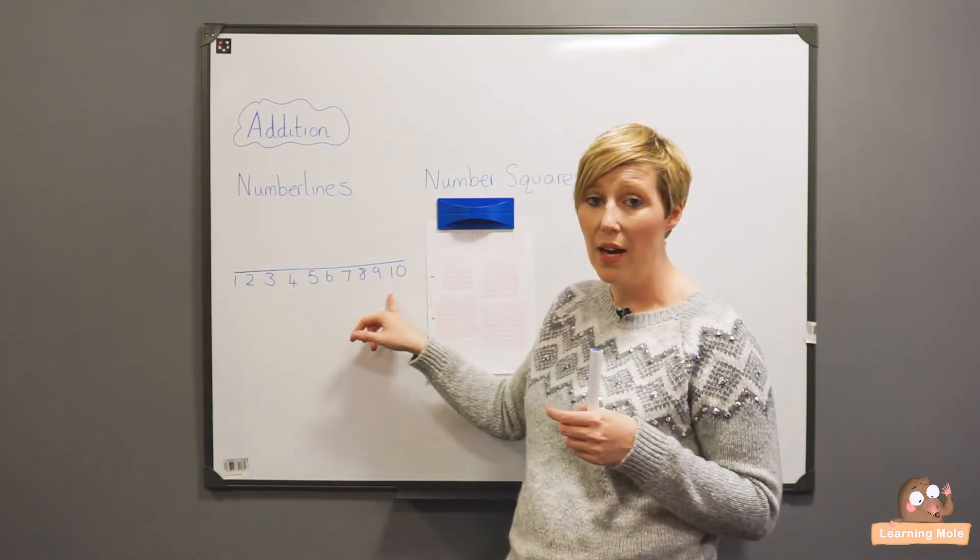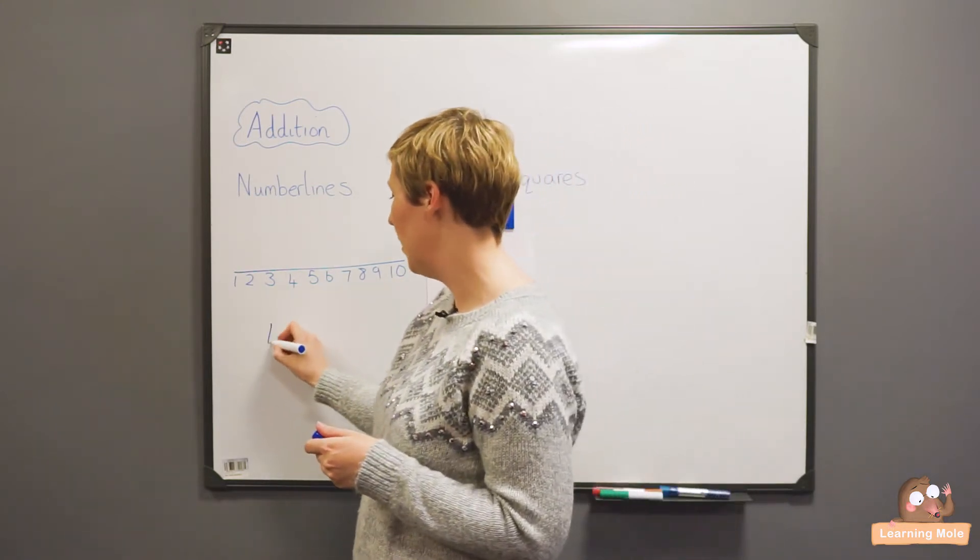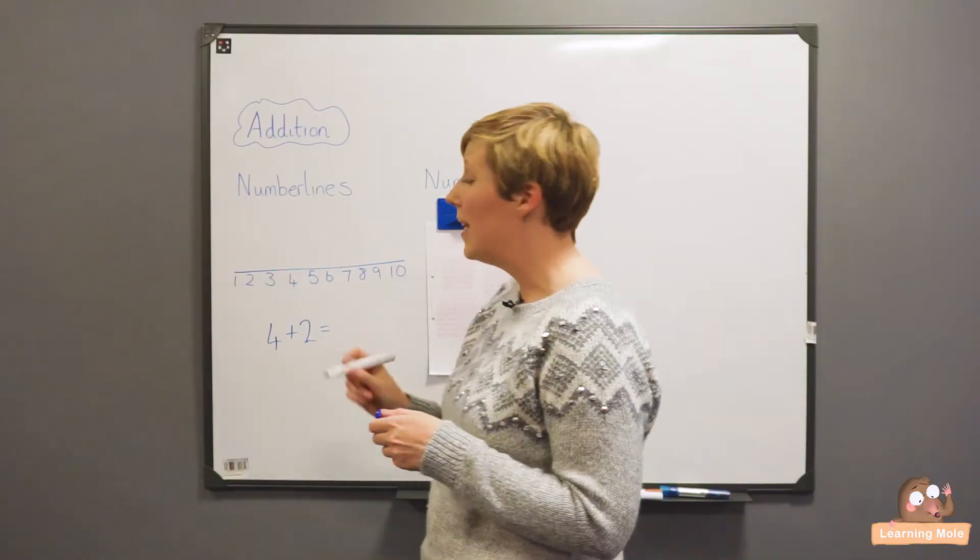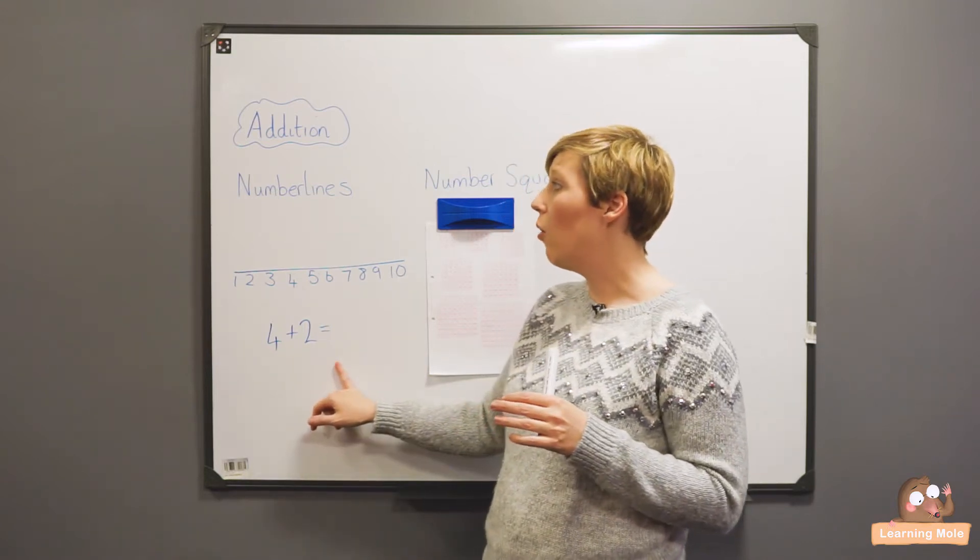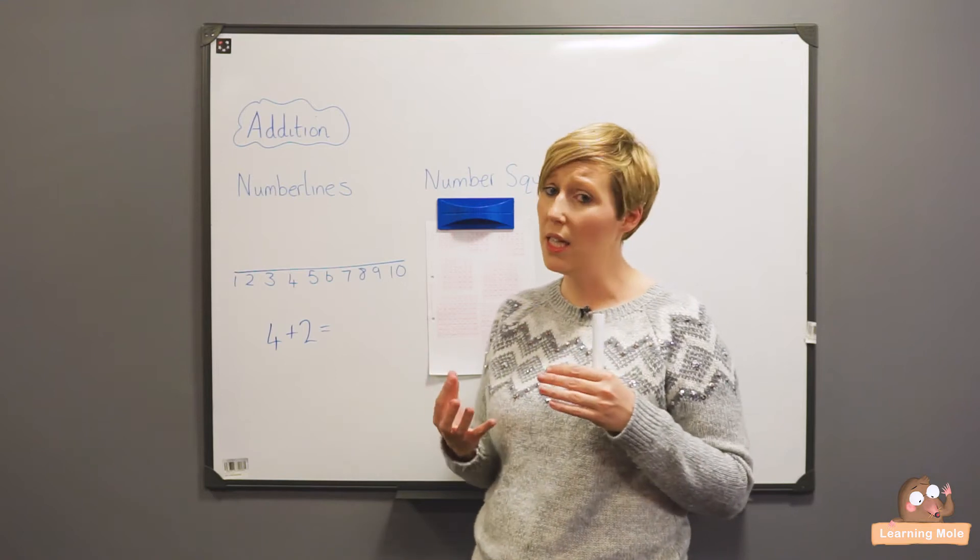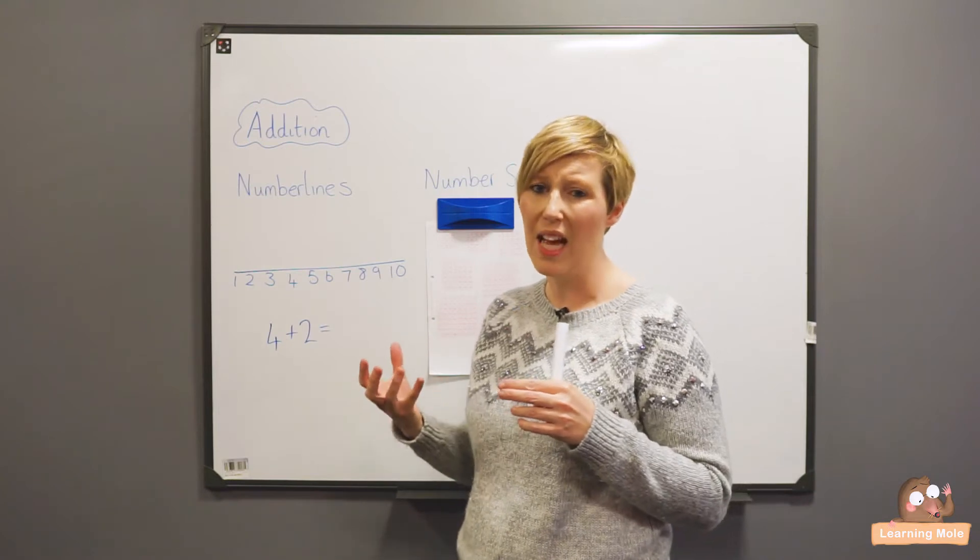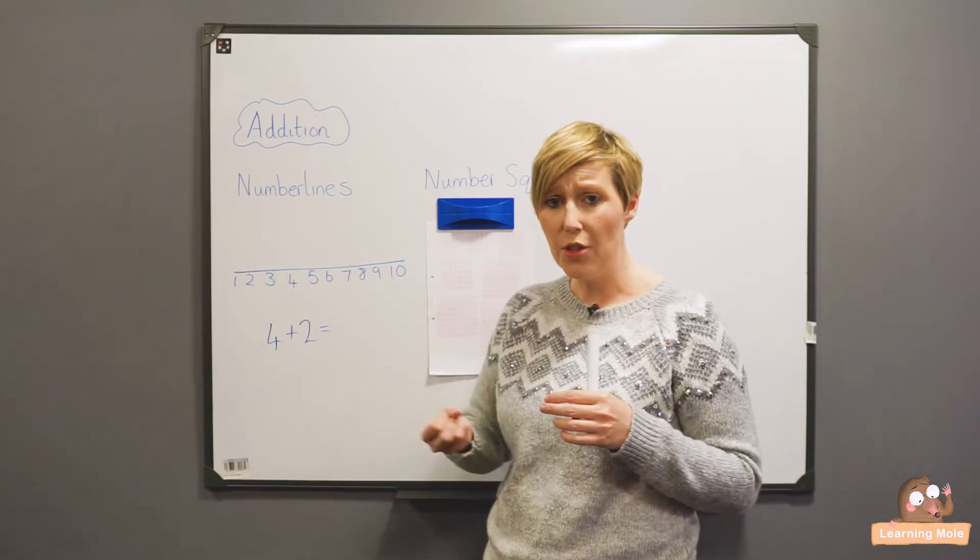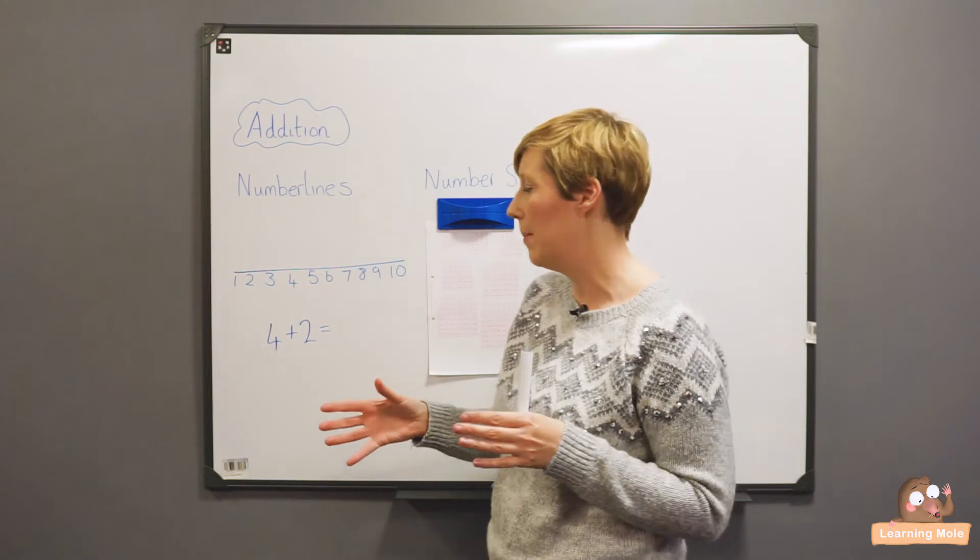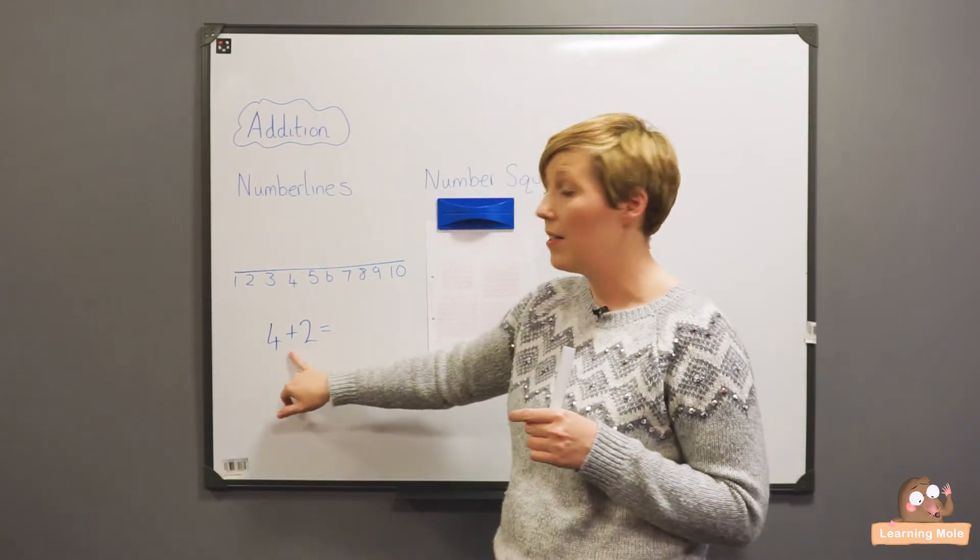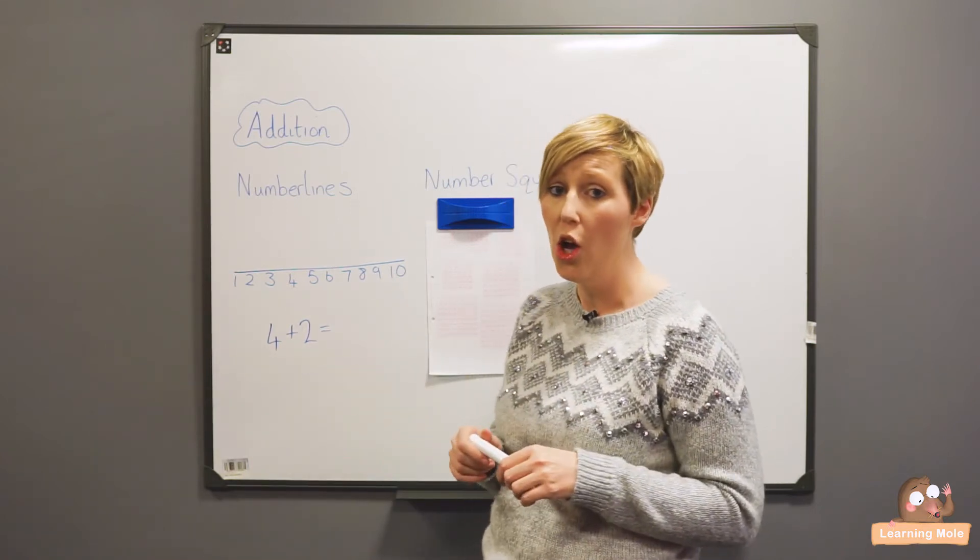I've got my number line with my numbers on there, and then you're going to show your child how to use it. For example, if I want to add 4 plus 2, this is the process you'll talk through with your child. First, we talk about putting the biggest number first. In addition it doesn't matter which way the numbers go, but putting the biggest number first makes the calculation easier—there are fewer numbers to work with, so your child has less chance of making a mistake.